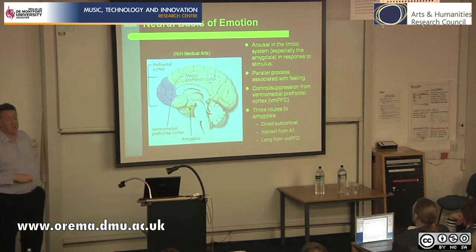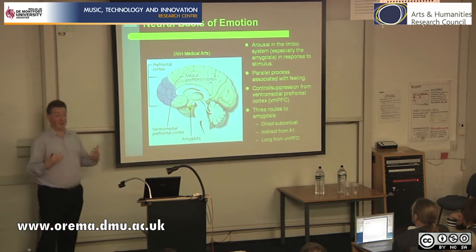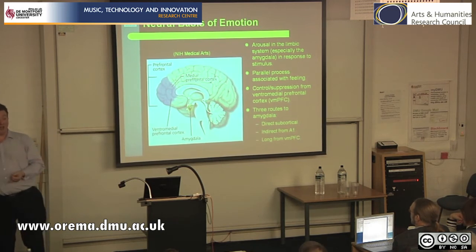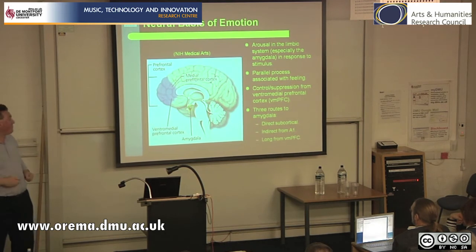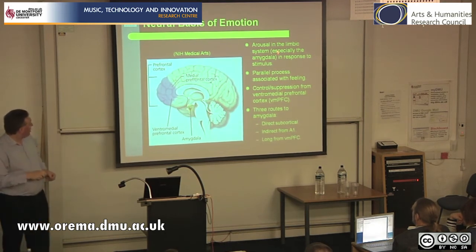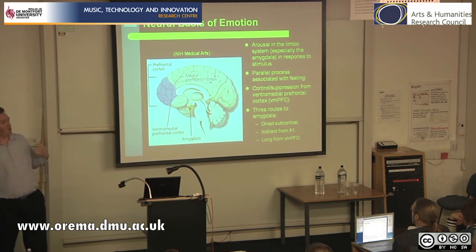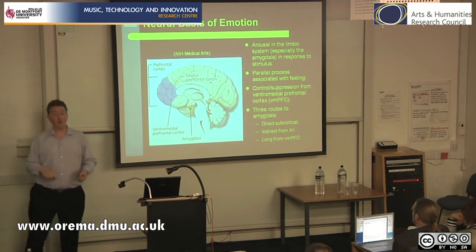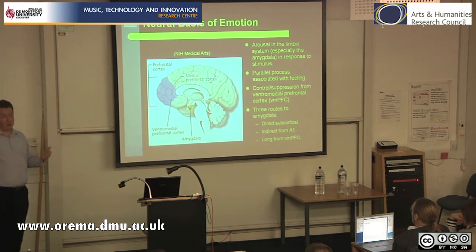Arousal in the limbic system occurs in response to a stimulus. The common-sense view is: you see something, you appraise it, and then you feel bad. In fact, it doesn't work like that — you immediately react and simultaneously come up with a feeling as to why. These two processes somewhat interact but they start independently. Arousal in the limbic system is particularly focused on the amygdala — in some sense your centre of emotional arousal. It receives inputs from three different pathways for auditory inputs: direct subcortical inputs from the inferior colliculus, where spatial and frequency information are combined; they feed directly into the amygdala, which is detecting threats or opportunities.